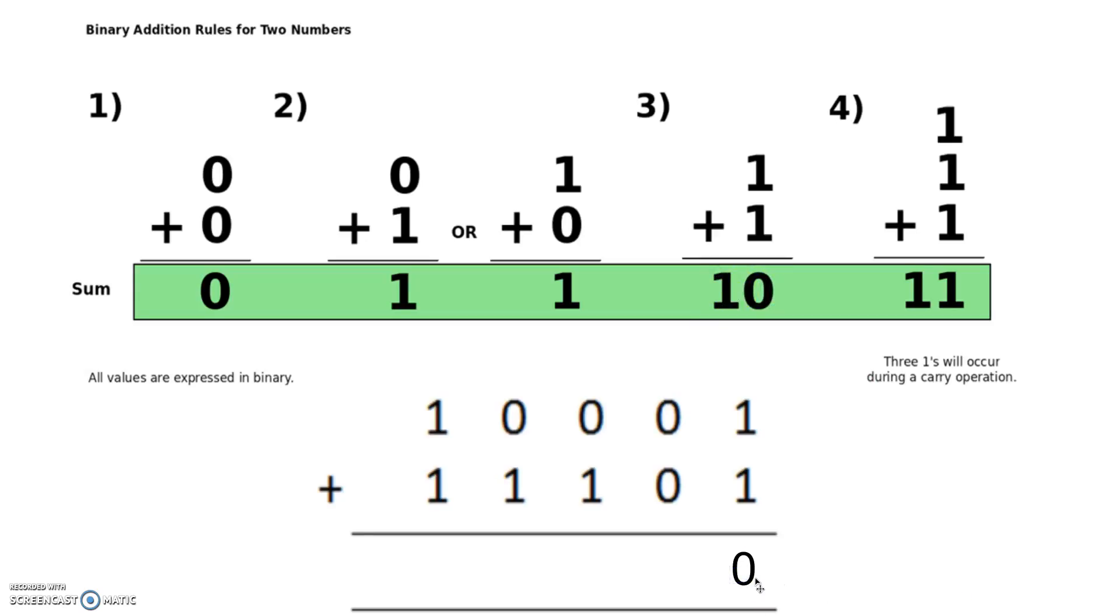And the one we're going to put up at the top of this column here, carrying just like we do in maths. Now we've got one plus zero plus zero, which is the same as rule two, so we're going to grab a one.